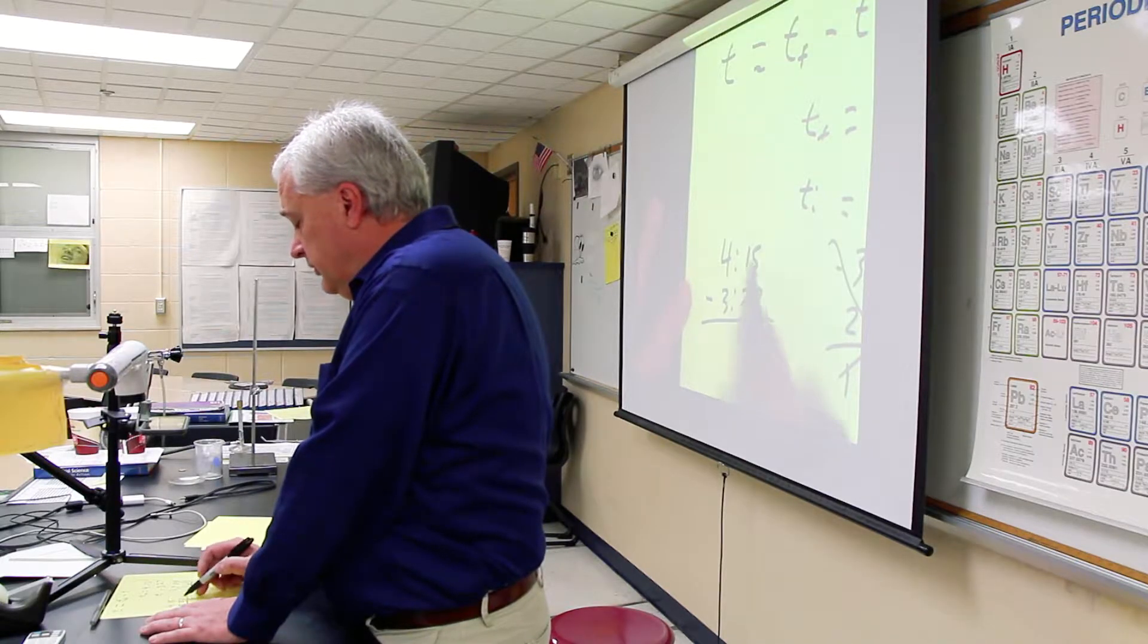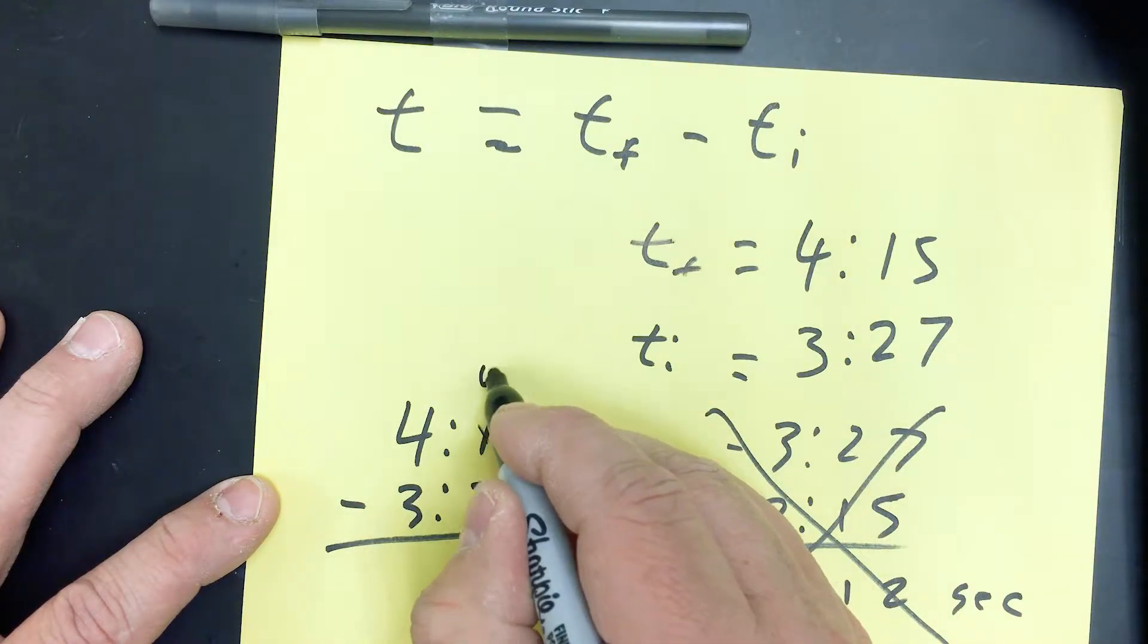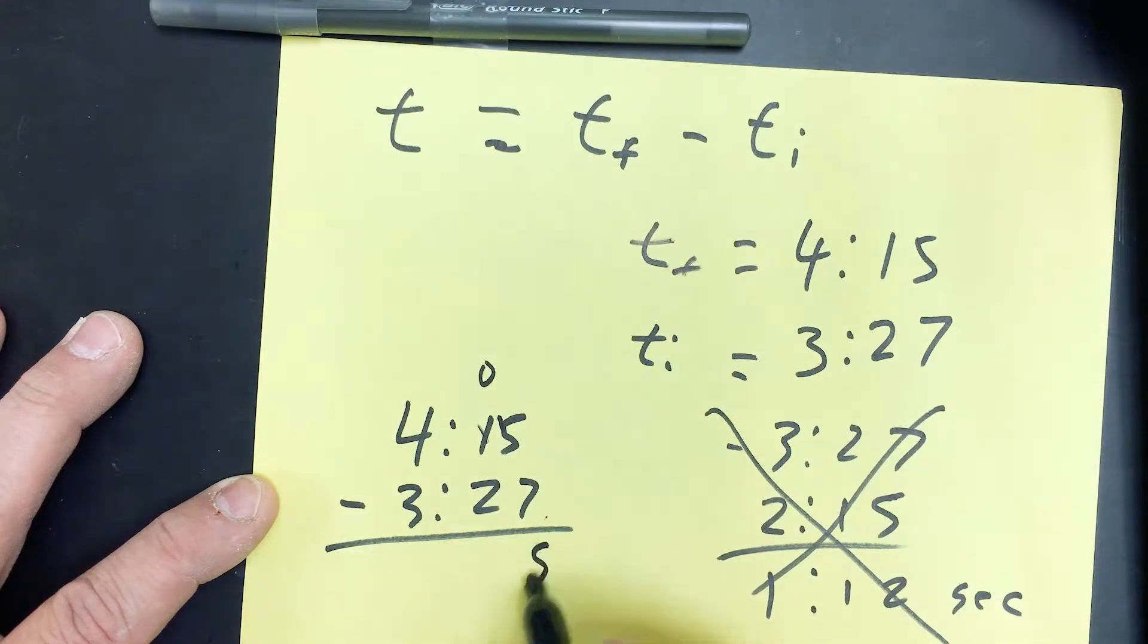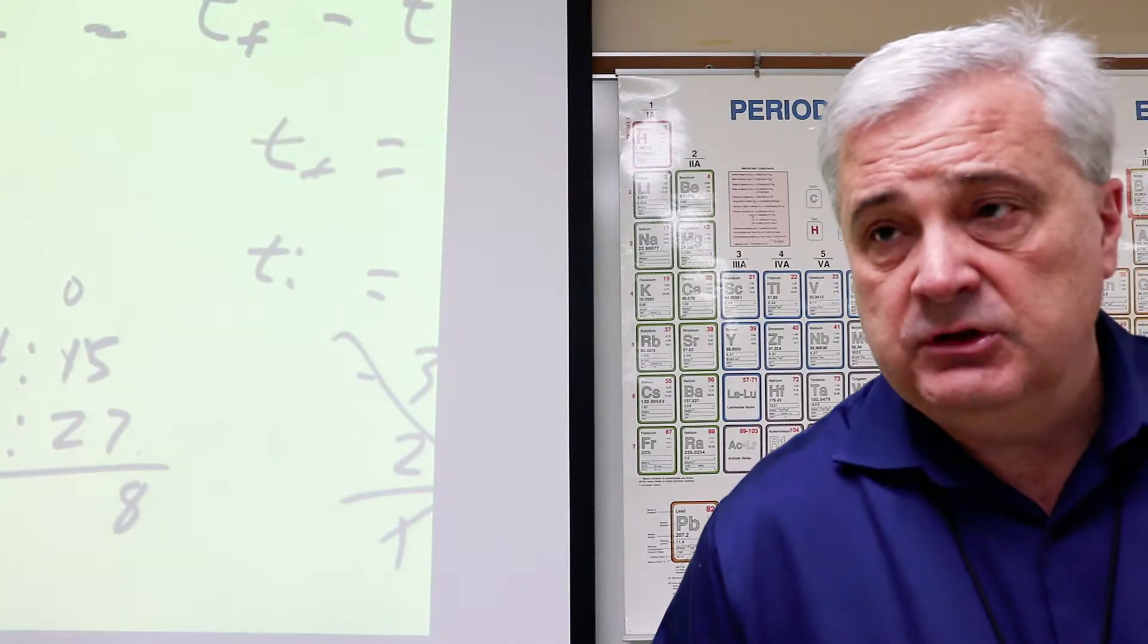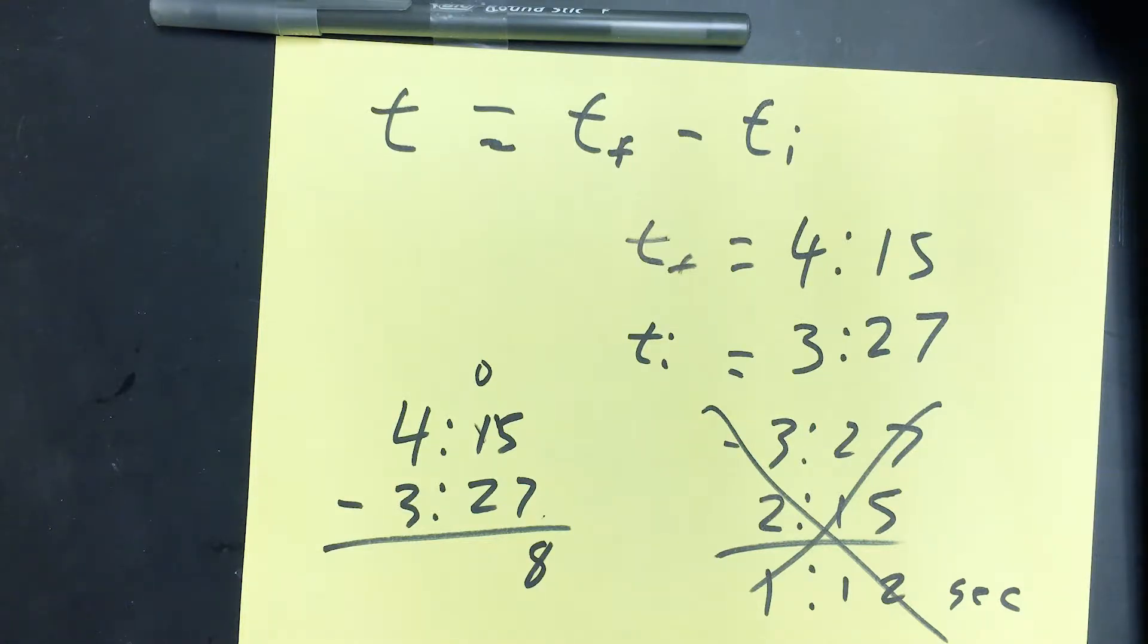So in order to do 5 minus 7, we have to borrow from the 1. That becomes a 0. And so we have 15 minus 7 is 8. 0 minus 2, we can't do. Now, here's where elapsed time calculation is different and tricky.